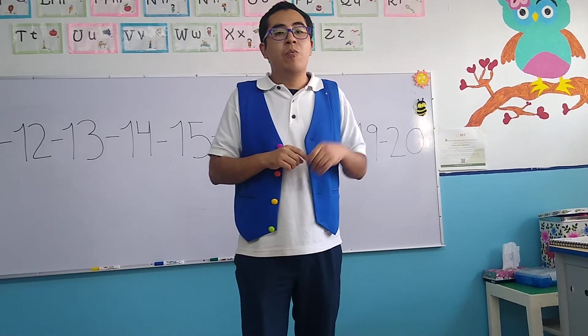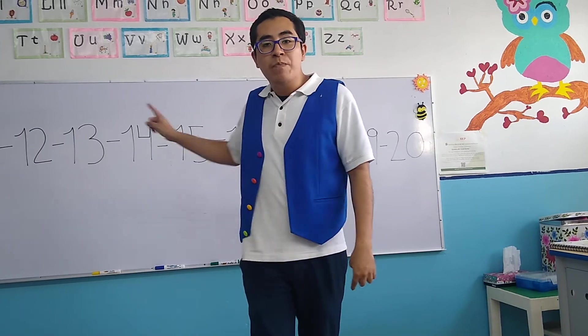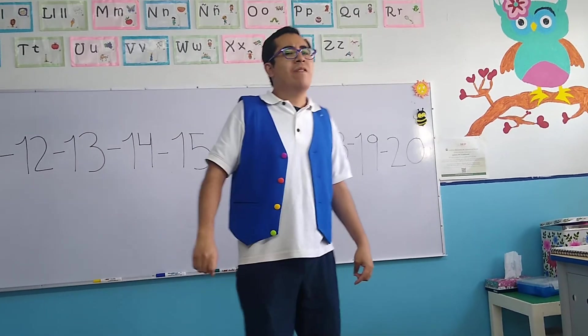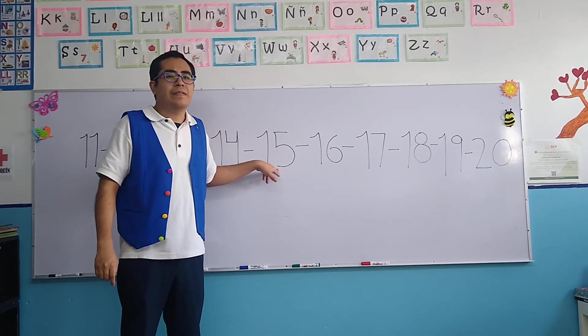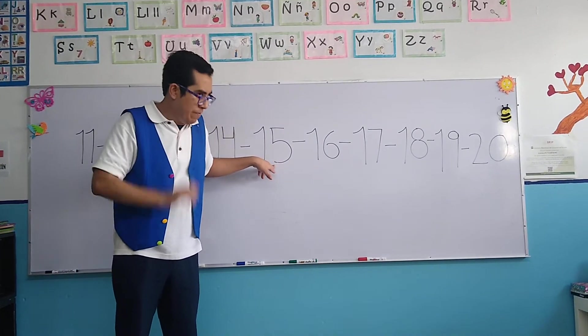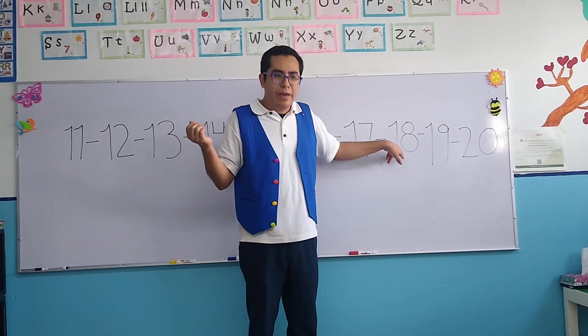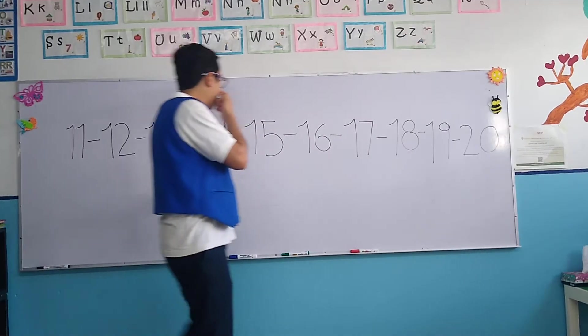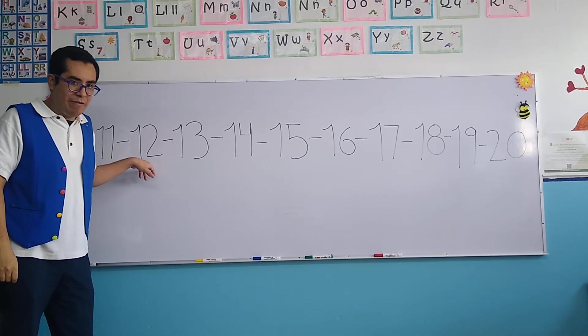Now, in your house with mother and father, don't forget to review the numbers. For example, what number is this? 15. What number is this? 18. What number is this? 12.